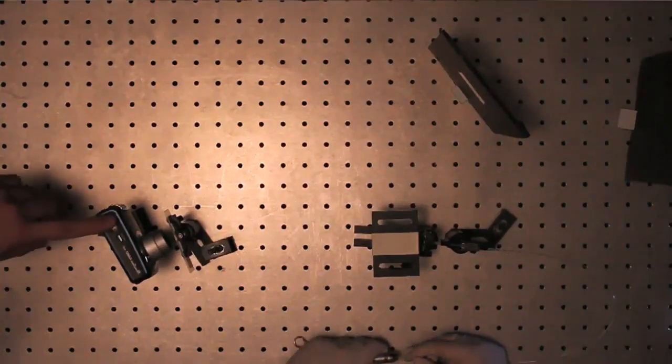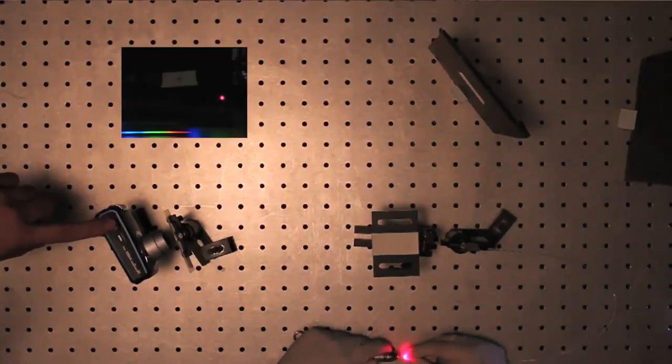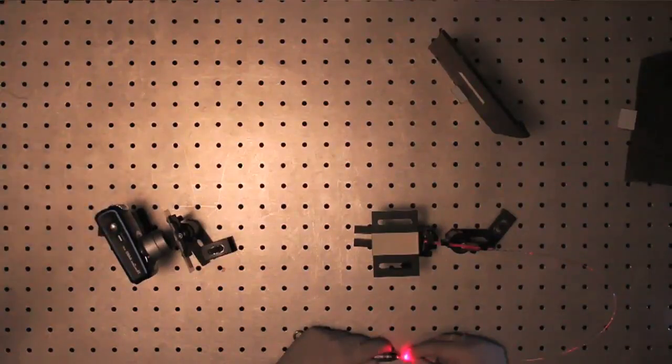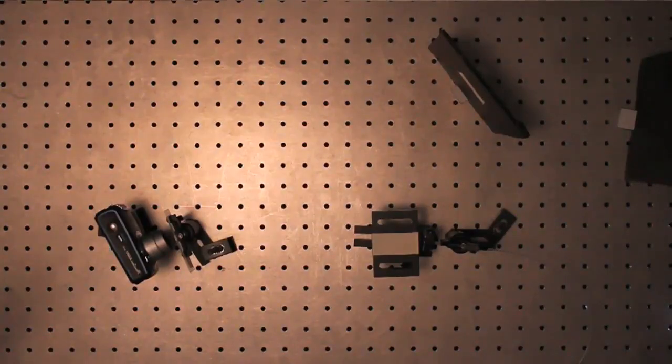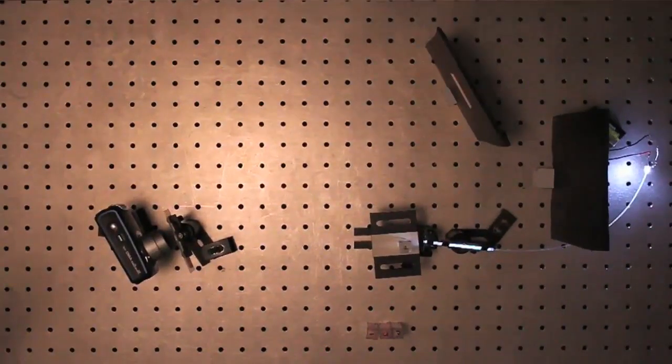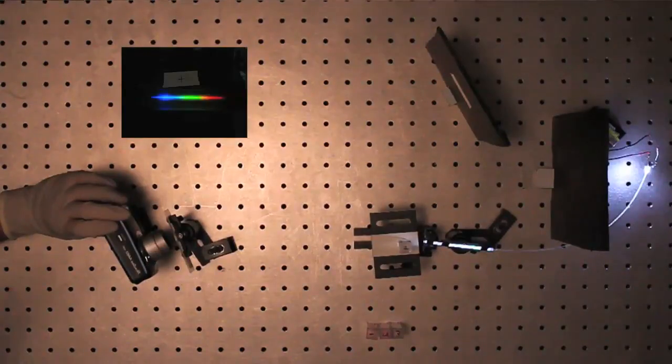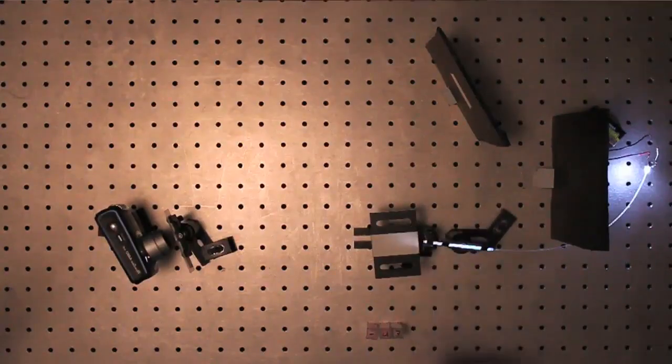Once you're finished with the calibration, mount each dye concentration in front of the light source and take the spectrum. Make sure to position the cuvette so the propagation thickness is one centimeter long. You will calculate the absorption and molar extinction coefficients in the post-lab analysis.